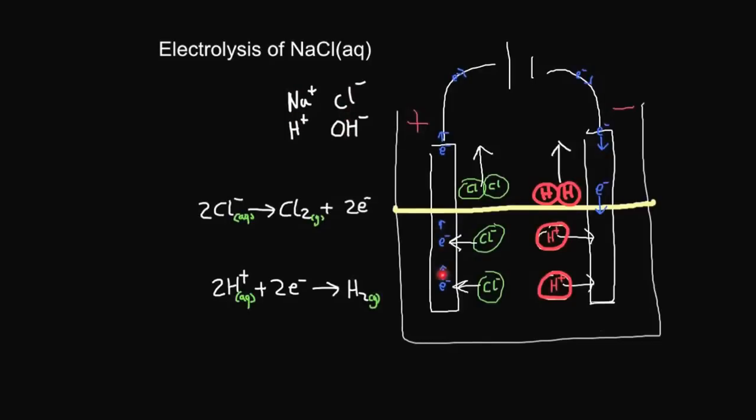At the positive electrode, as before, the chloride ions are attracted to the positive electrode. They each give up one electron and form chlorine gas, which escapes and you see bubbling at the positive electrode.